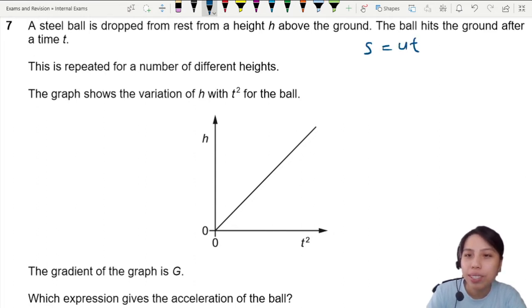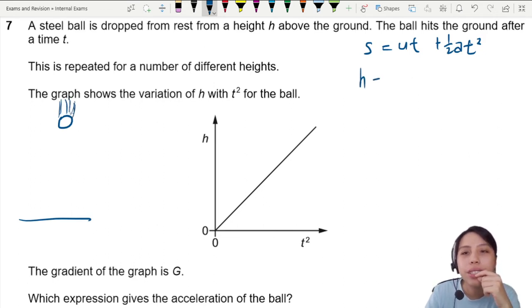But in this case we substitute the values here. The height that you drop a ball down to the ground is gonna be h. Initial speed drop from rest means u is zero, so this whole term here is zero. All that's left is half a t².